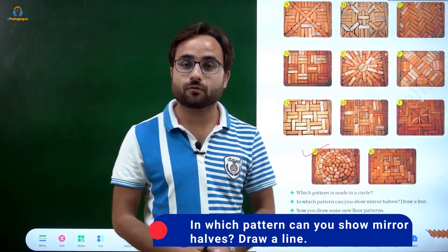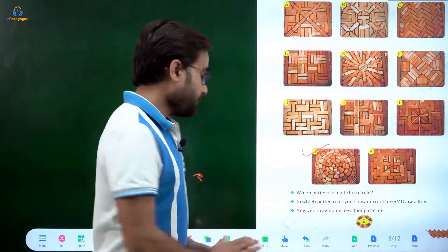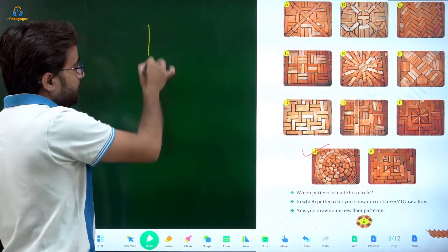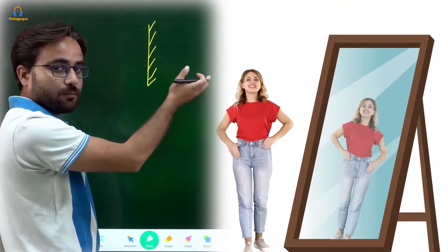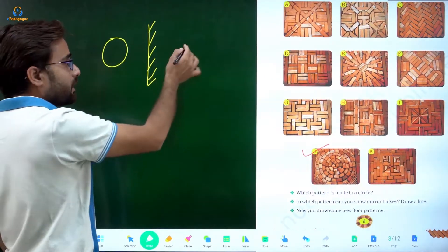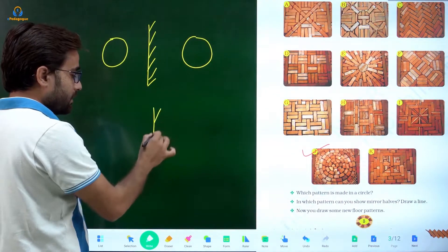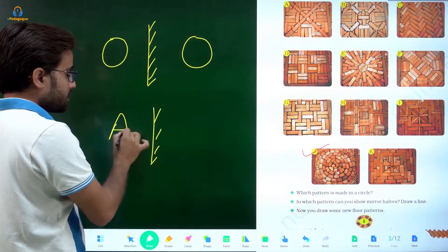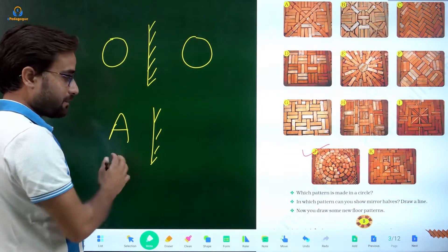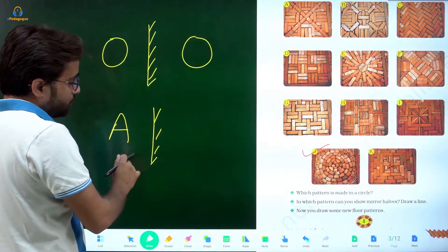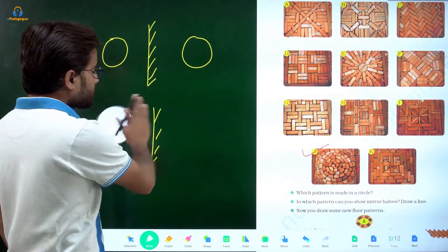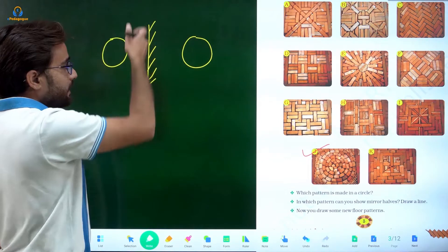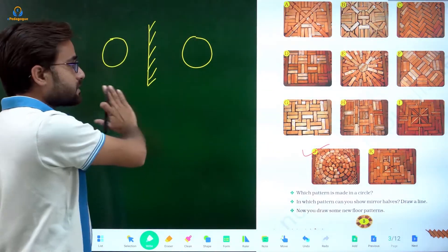The next question is: in which pattern can you show mirror halves? Mirror halves means that if you place a mirror along a line, the object on one side and its mirror image on the other side are the same copy. For example, if you draw something on one side and then look in the mirror, it appears the same. Mirror halves means there is a line along which both sides are the same — same copied.